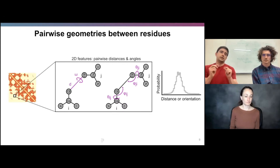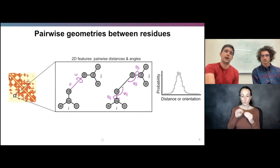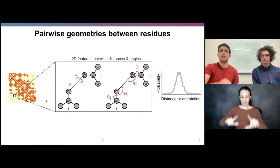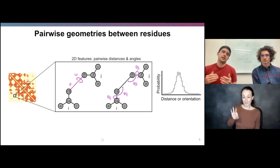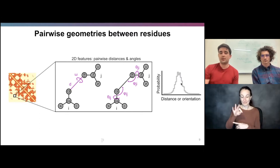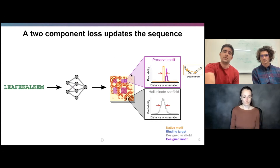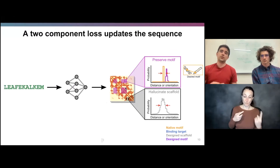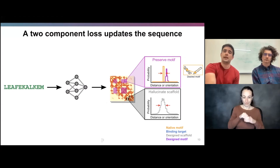Getting a bit more specific, this pairwise interaction matrix — if you zoom into one particular IJ interaction — contains all six degrees of freedom: one distance, two dihedrals, and three angle distributions. The network makes these predictions as a distribution over each degree of freedom rather than a single scalar value. In the loss function, we score this distribution in two ways. We take the output from RoseTTAFold and mask it into two regions: all of the inter-geometric contacts within the motif, and everything else outside the motif.